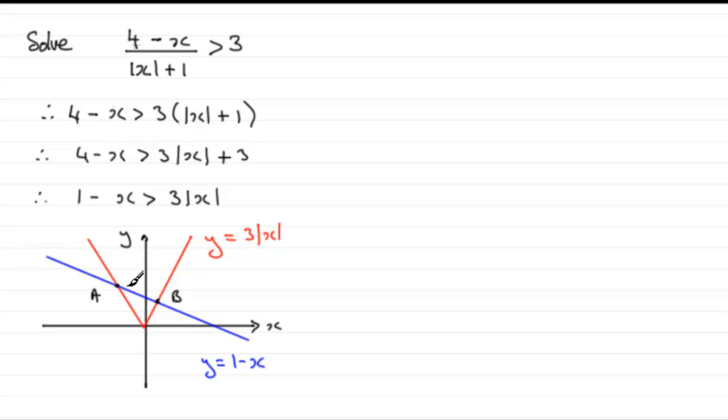Which is essentially where the blue graph is above the red graph. And the blue graph is above the red graph in this interval between a and b, the x values that are between a and b. So I need to find out those points of intersection.